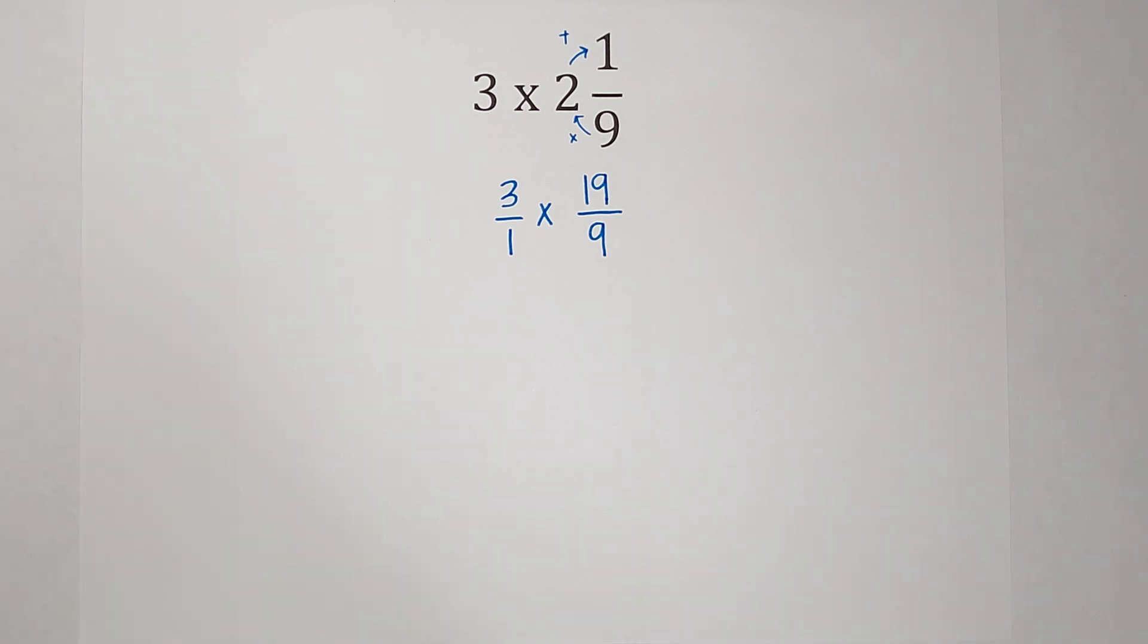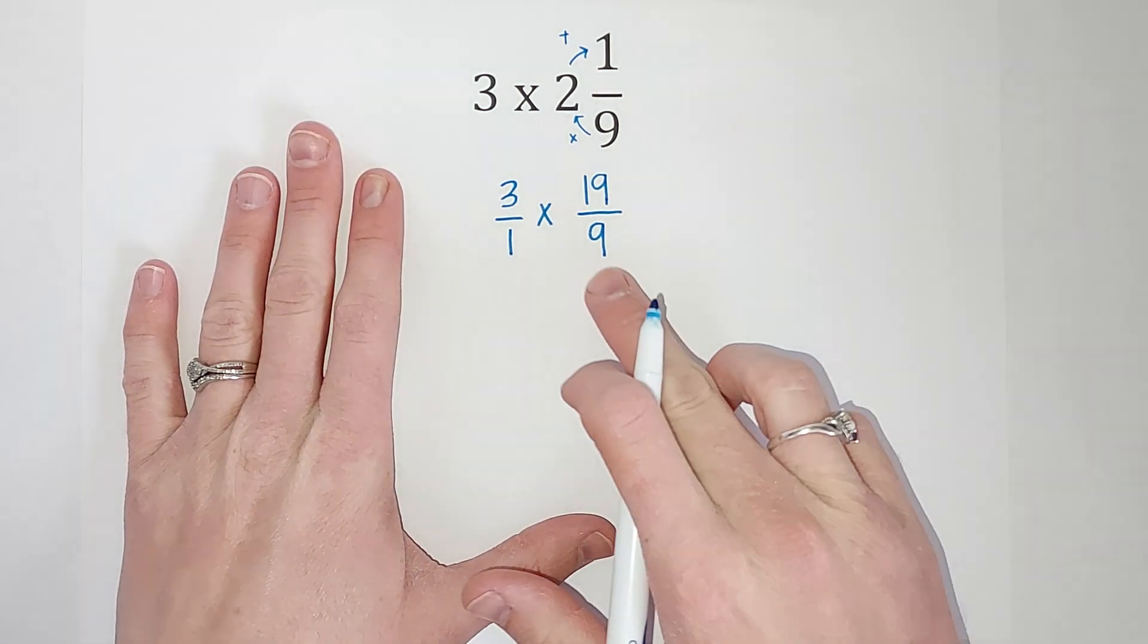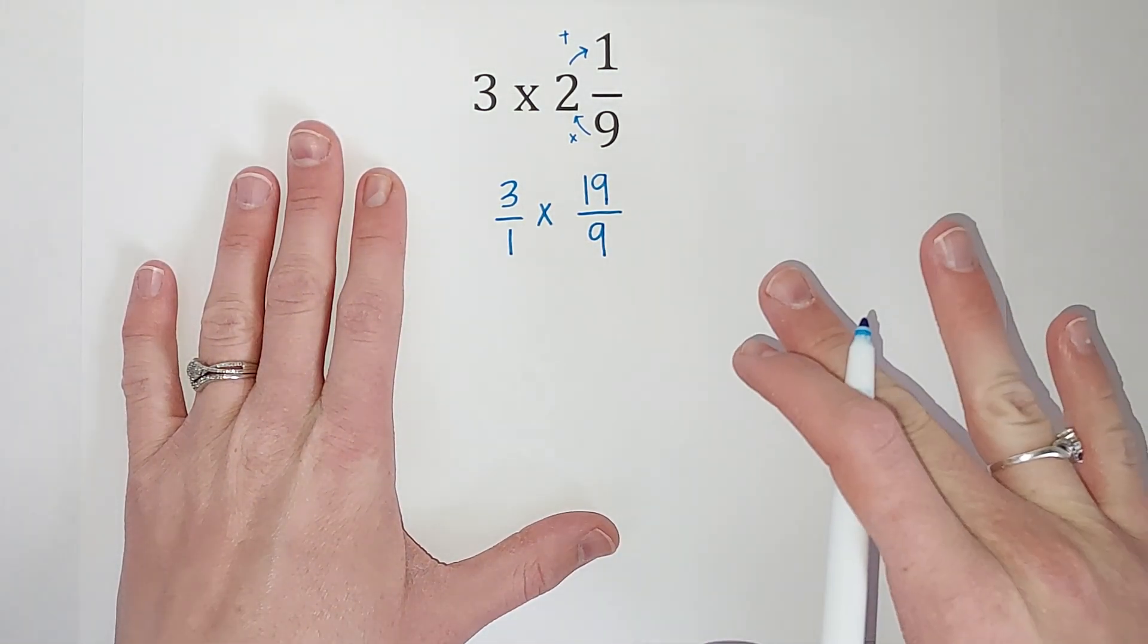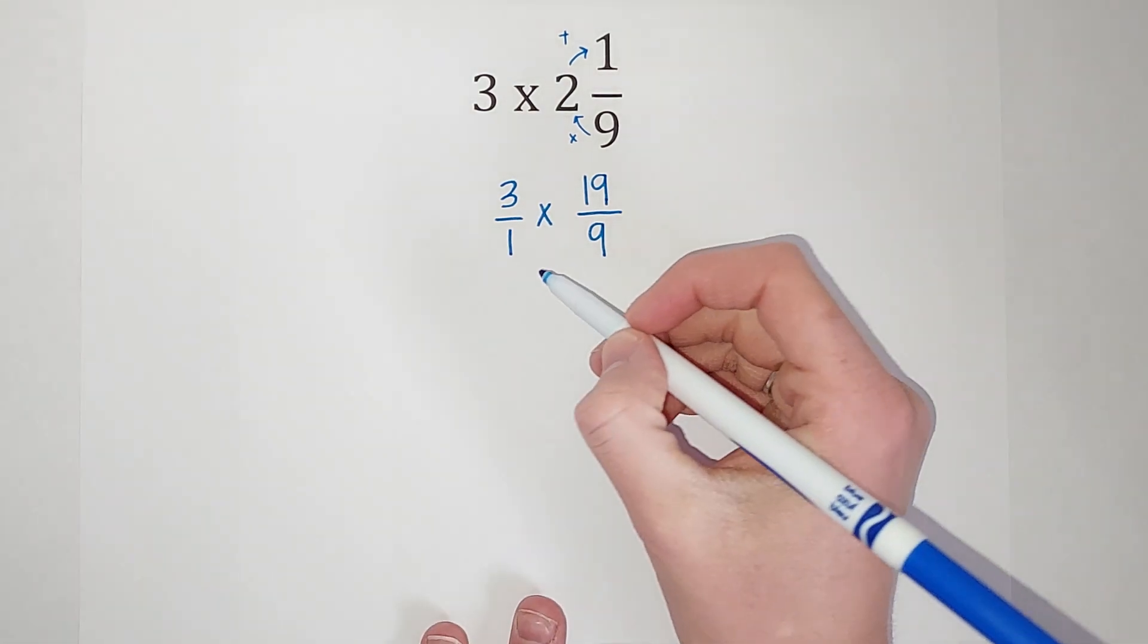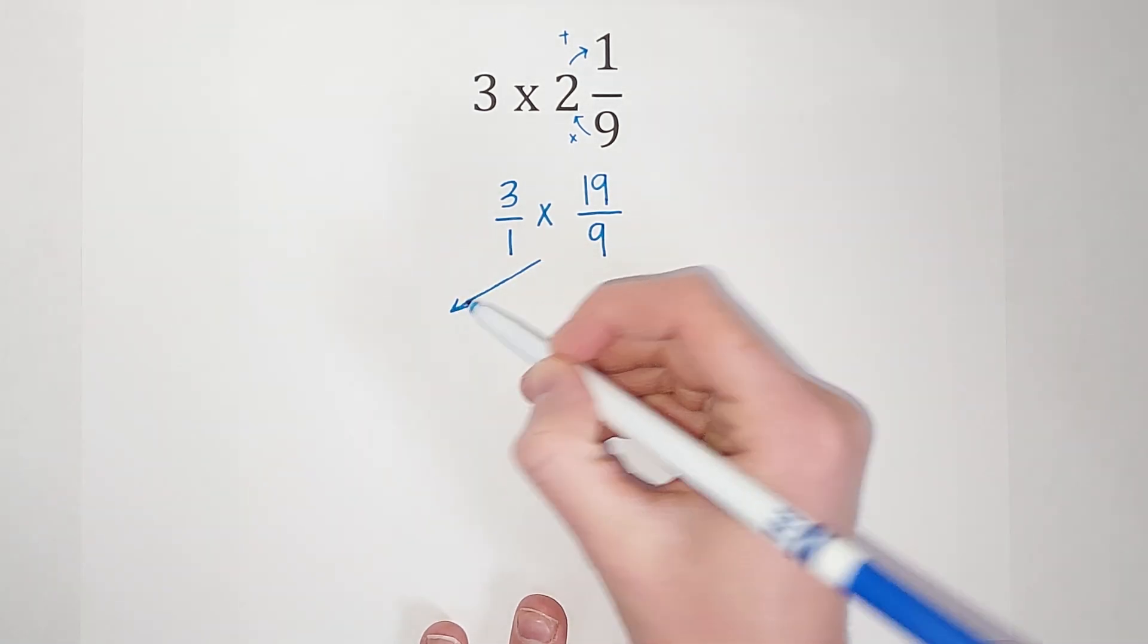All right. Now, the good news about when we multiply fractions is that the denominators don't have to be the same. So we can just go ahead and multiply straight across. But there's two ways I could look at this. So we're going to look at two ways.